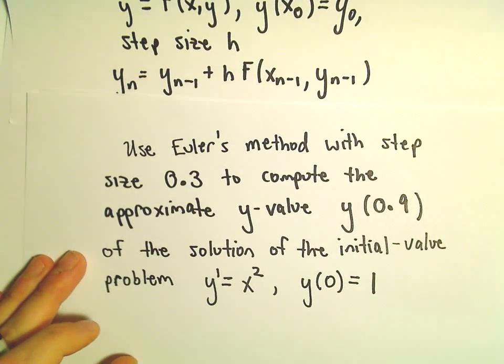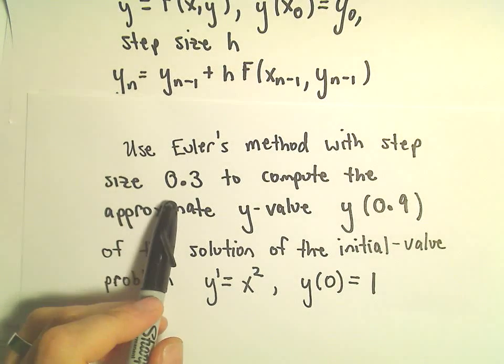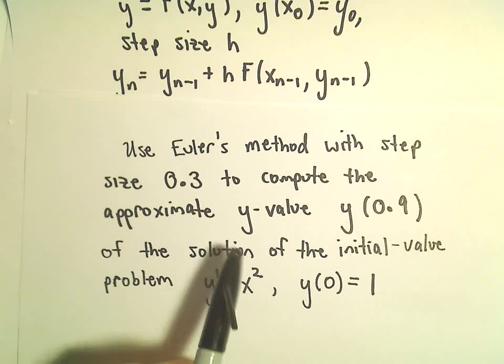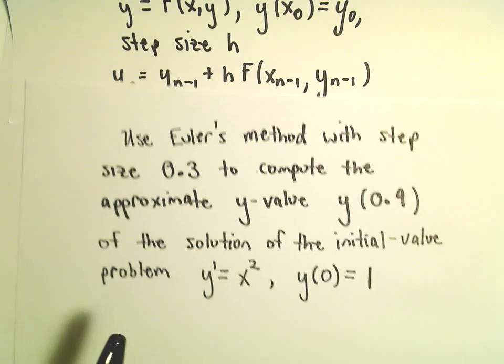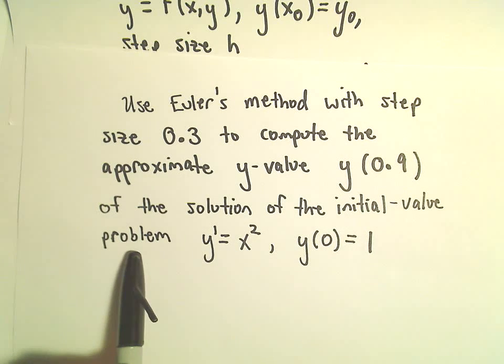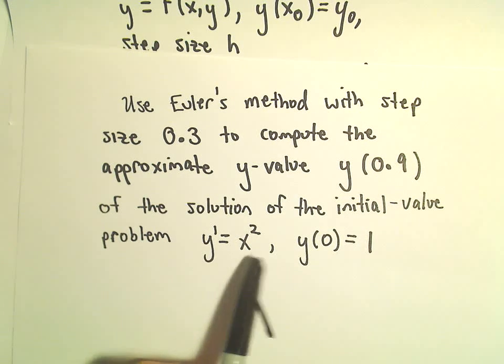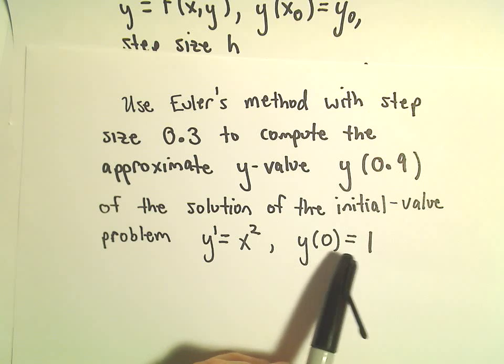So we're going to use Euler's method with a step size of 0.3 to approximate the y value, y of 0.9, of the solution of the initial value problem, y prime equals x squared and y of 0 equals 1.